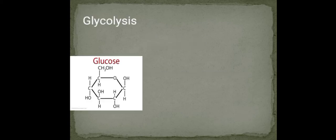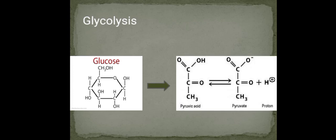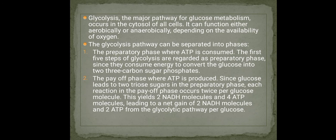Glycolysis is the sequence of 10 enzyme-catalyzed reactions that converts glucose into pyruvate with simultaneous production of ATP. In this process, 1 mole of glucose is oxidized to 2 moles of pyruvate.